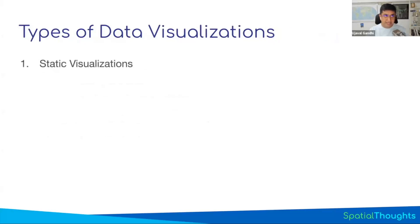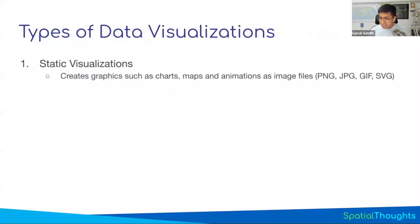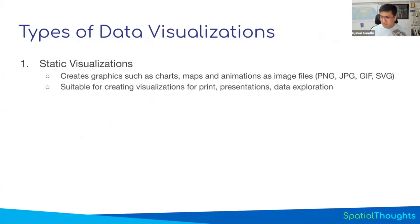I want to break down visualization into two parts — the course is split into two halves. One is static visualization: you want to create a graph, a map, or some animation. You create it and it serves as a file — a PNG, JPEG, or animated GIF that you can embed in your website, presentation, or report. That's what you'd call static visualization.